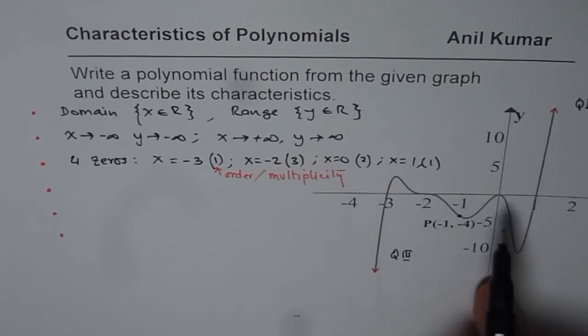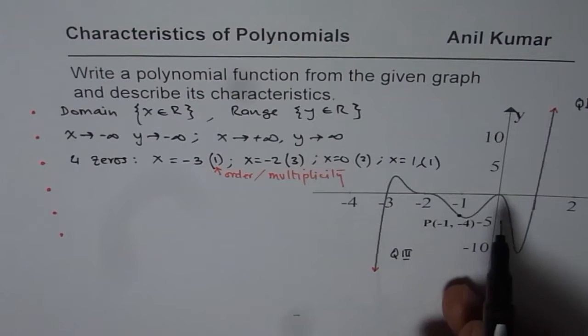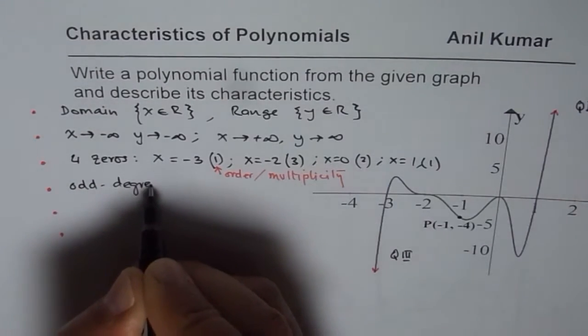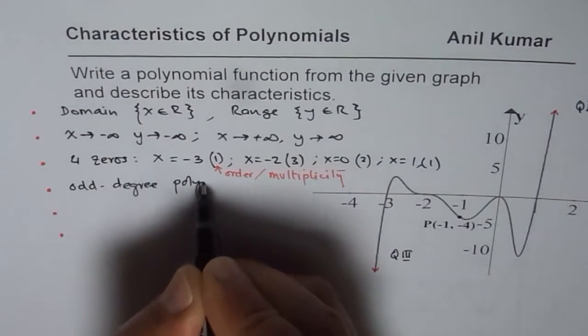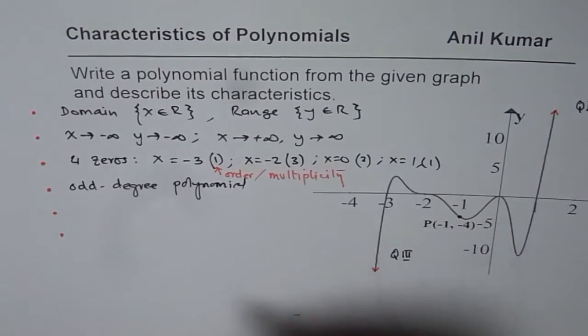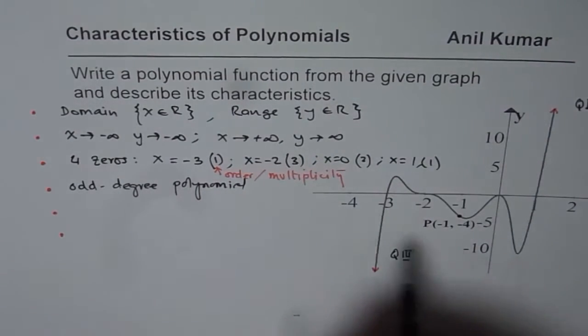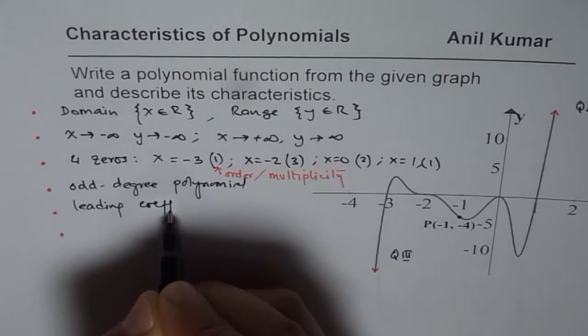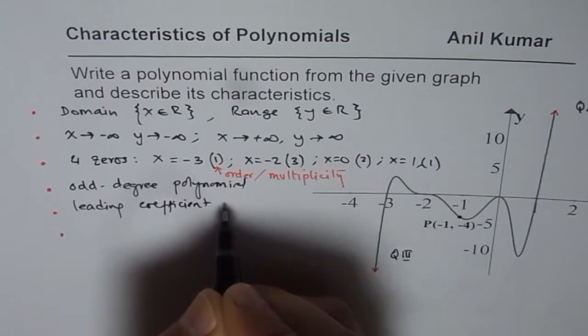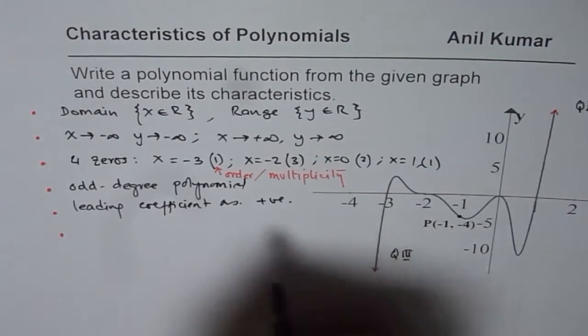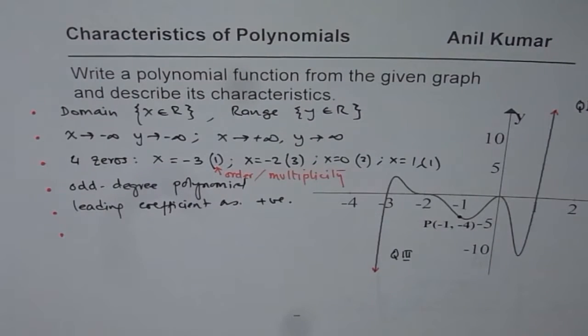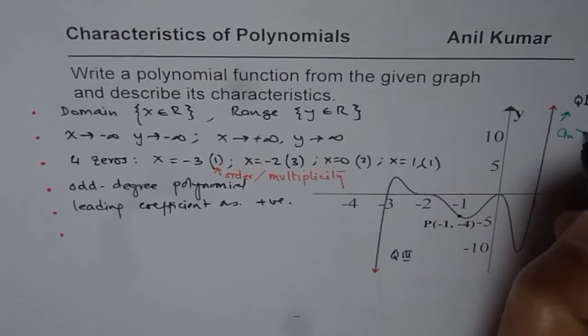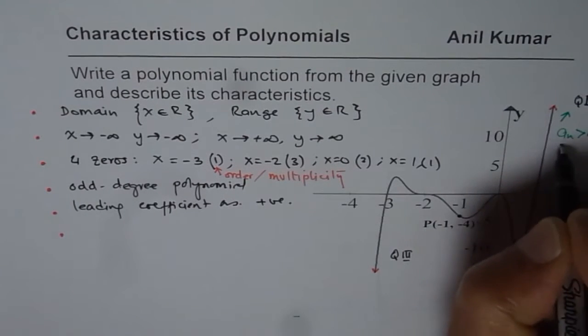Now, can you tell me from here what kind of leading coefficient do you expect? So, we know it is an odd degree polynomial. Since both are going to the opposite ends, it's an odd degree polynomial with leading coefficient as positive. Now, how do you know that? Right side is up. That is how we know it. So that means leading coefficient an is positive. That means an is greater than 0.